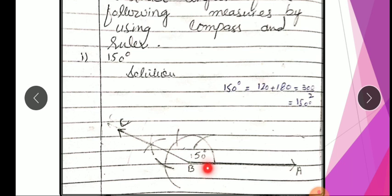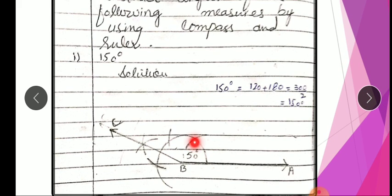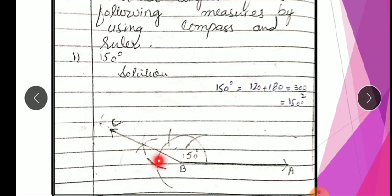Aapne jitni compass open rakhi hai, utni hi open rakhi hai — jitni ye semicircle ke liye lagi hai. Thik hai, aapni compass ka area change mat karin. Aap yahan pe compass rakhate hain aur ek arc laga lete hain. Yeh jo aapki first arc hoti hai, yeh 60 degree ki hoti hai. Thik hai students, yeh aapke paas automatically 60 degree ki arc aa jaati hai. Iske baad hum yahan pe 60 degree pe rakh ke doosri arc laga lete hain — yeh aapke paas ho jayegi 120 degree. Phir hum third arc laga lete hain, jo kya ho jayegi — 180 degree. Thik hai students, yeh teen arc ho gayi.